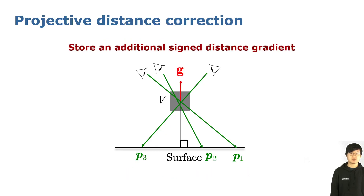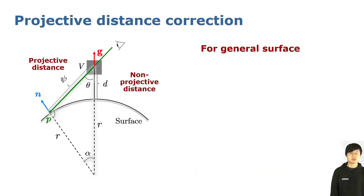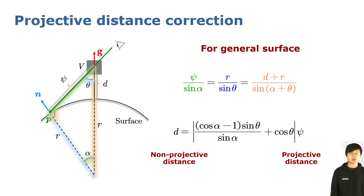To solve this issue, we propose to store an additional signed distance gradient G into the voxel. The gradient can be integrated from the surface normal, shown in blue, from different perspectives as a normalized weighted mean. The surface normal can be estimated from the range image by cross-product efficiently. With the integrated gradient G and the surface normal N, we can conduct the projective distance correction. For the more general surface shown in this figure, we use the law of sines to calculate the non-projective distance D from the projective one, psi. Then we integrate the non-projective TSDF by taking the weighted mean.